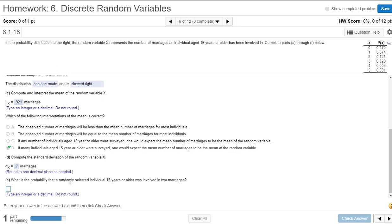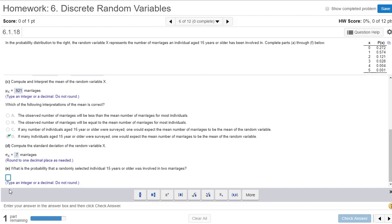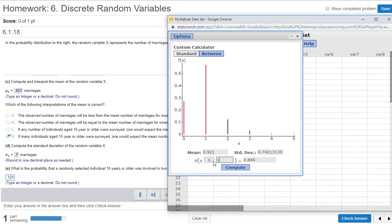So what is the probability that a randomly selected individual 15 years or older was involved in two marriages? So this is easy enough, right? Look up here at your table. You see two, and the probability is 0.121. Now, these can get a little tricky when these tables get big, and that calculator that we pulled up can compute that. So if we wanted it equal to two, that's pretty easy, and it even highlights it for us. It's nice when you say maybe we want it greater than two. It highlights that and gives us that two. So it already adds those values up, which is nice.